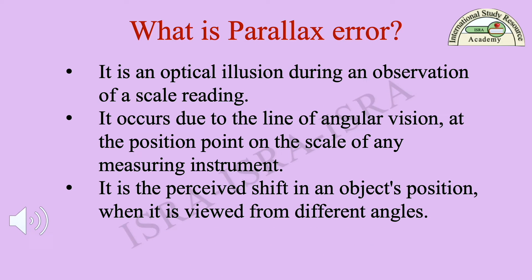What is parallax error? It is an optical illusion during an observation of scale reading. It occurs due to the line of angular vision at the position point on the scale of any measuring instrument. It is the perceived shift in an object's position when it is viewed from different angles.